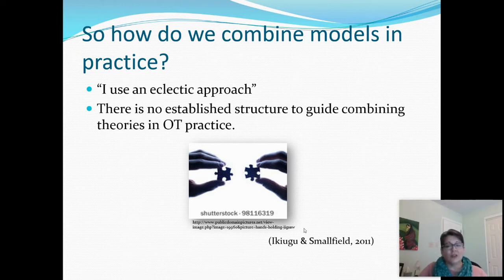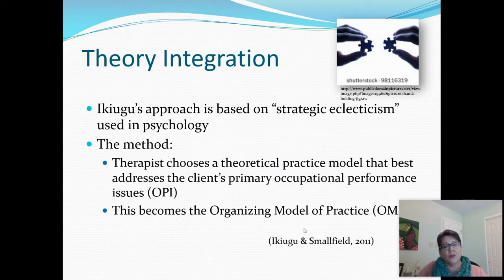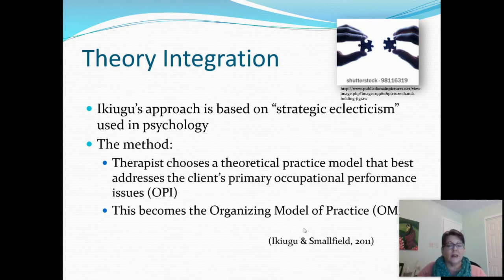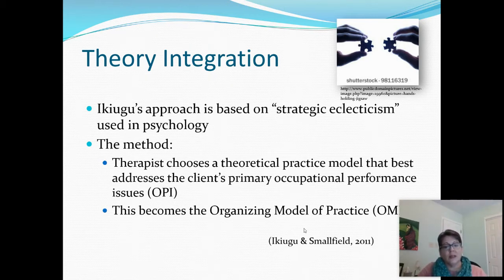There isn't any established structure for helping occupational therapists think about how they're using theory in practice. Moses Aikyugu approached this by proposing strategic eclecticism, which comes from psychology. This begins with an occupational therapist choosing a theoretical practice model that makes sense to them in light of their particular client — this becomes the organizing model of practice, which centers the occupational therapist's thinking.